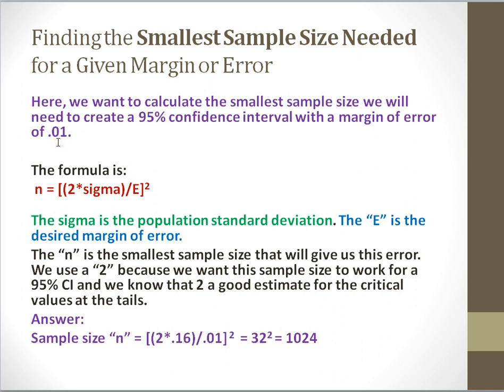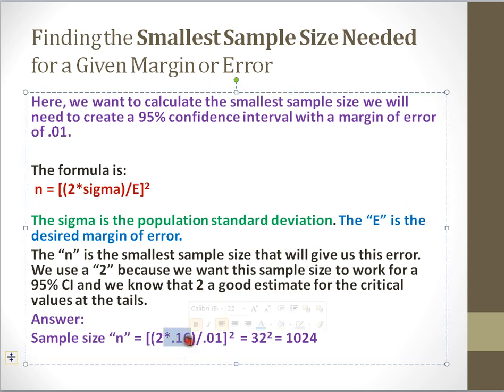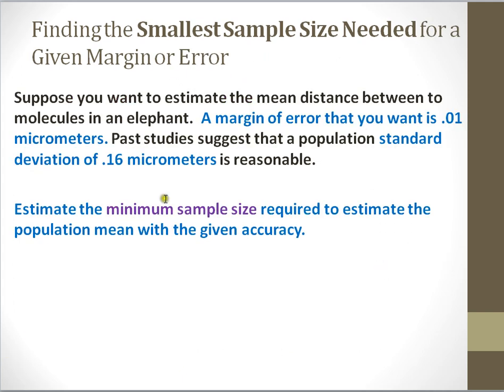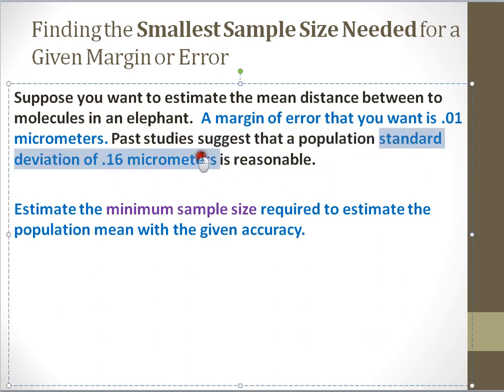My sample size is equal to 2 times sigma. Remember, sigma is my standard deviation for the problem, divided by my E, or my margin of error. And then that whole thing is going to be squared. So in this particular problem, what am I given? Well, my sigma value given to me was 0.16, if you remember from the problem.